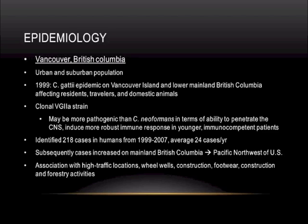Since surveillance started in 2003–04, there has been migration and expansion of the epidemic zone to the Pacific Northwest of the United States. Hypothesized means of spread include high-traffic locations, vegetation or dirt in vehicle wheel wells, footwear, and construction and forestry activities — as there is an association with firs and maple trees in that area. As far as why this outbreak happened, no one really knows. There have been some theories regarding climate change, but nothing has been definitively discovered.